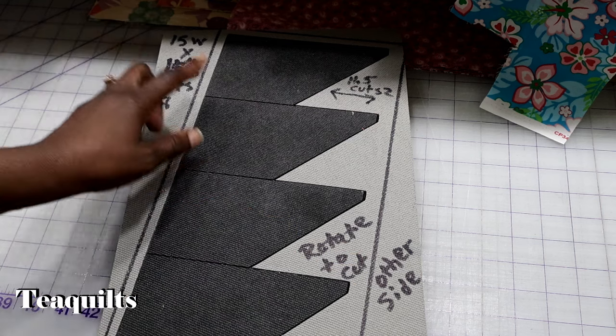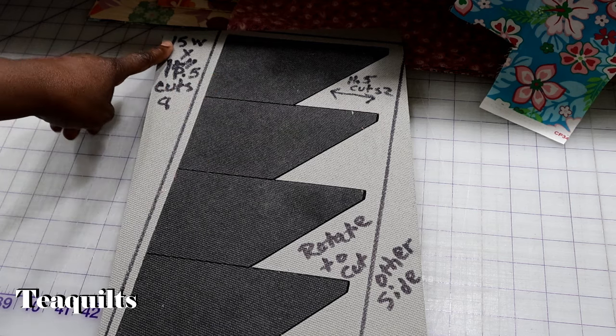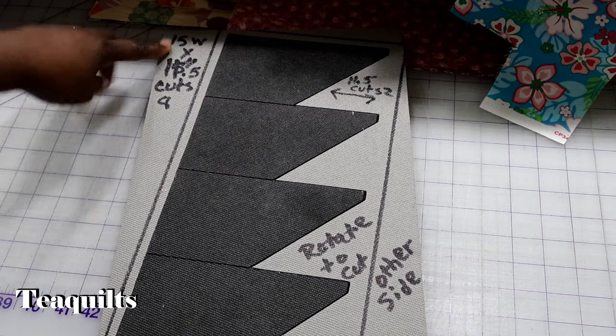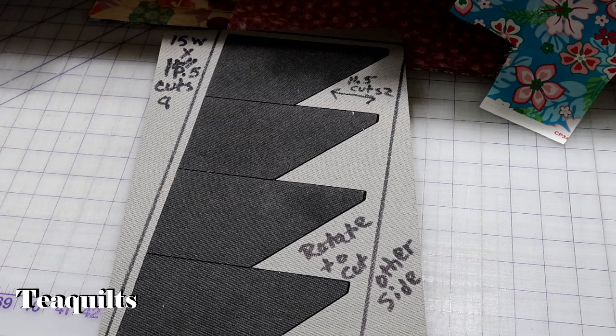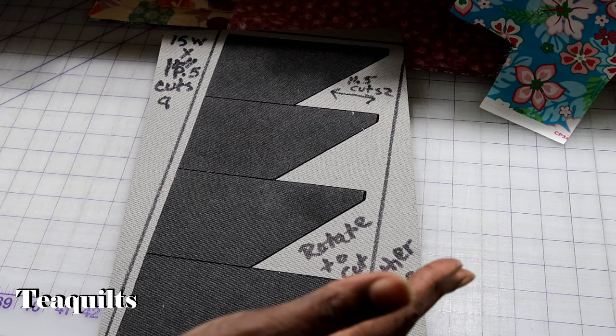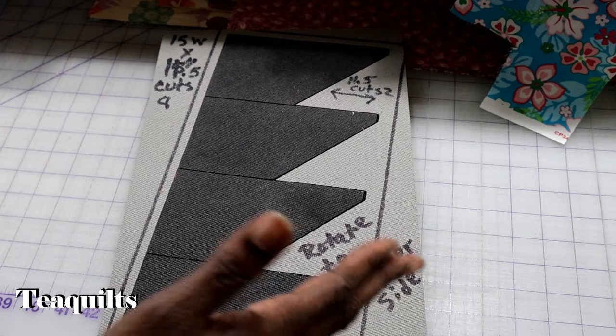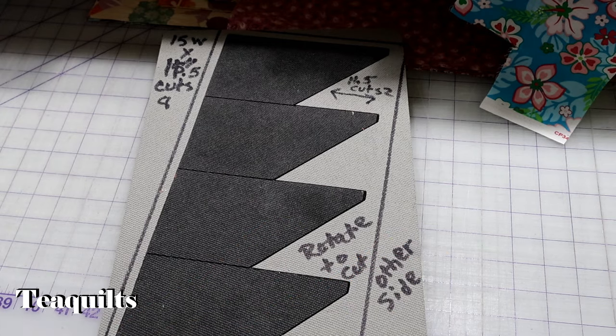So, I also mark on the die the width of fabric that I need to cut. Most times when I'm cutting fabric to die cut, I cut a width of fabric off of the yardage—well, a length, shall I say, of fabric off the yardage.